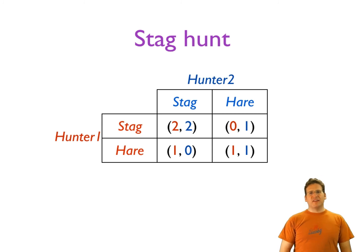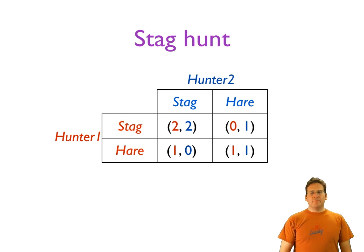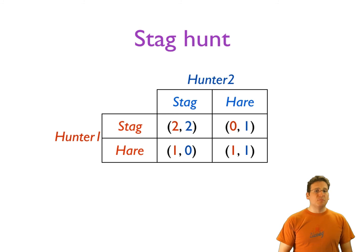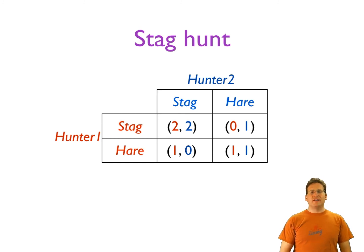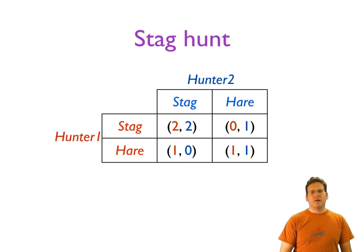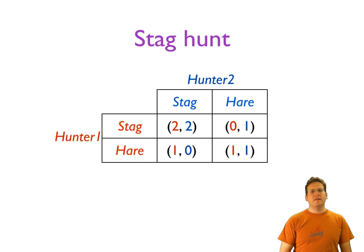Our last toy game is Stag Hunt. The players are two hunters who each choose to either hunt for stag or hunt for hare. If they both hunt stag, they can handle it together and each gets a payoff of two — the highest possible. If they both hunt hare, they don't need each other but get less meat, so each gets a payoff of one. If hunter one hunts stag but hunter two hunts hare, hunter one gets nothing because he needs hunter two's help, while hunter two gets one from the hare. The symmetric case gives hunter two nothing and hunter one the hare payoff of one.